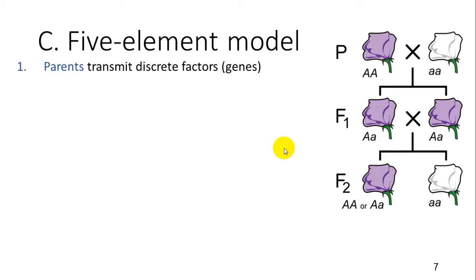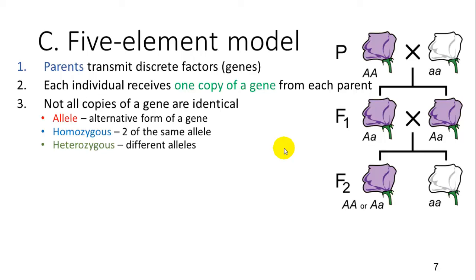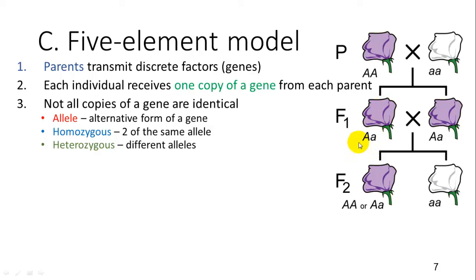The five element model Mendel came up with: first, parents transmit discrete factors, later called genes. Each individual receives one copy of a gene from each parent. Not all copies of a gene are identical — an allele is an alternative form of a gene. We have a big A allele coding for purple and a little a allele coding for white. Homozygous means two of the same allele — two alleles for purple or two for white. Heterozygous means different alleles — one for purple and one for white.